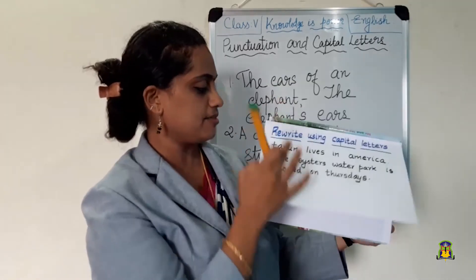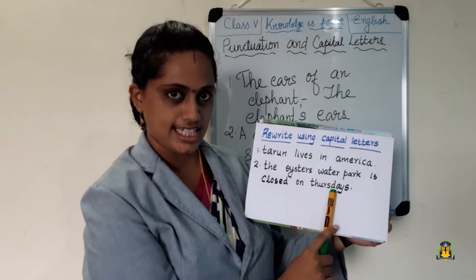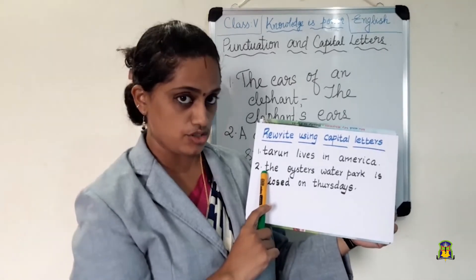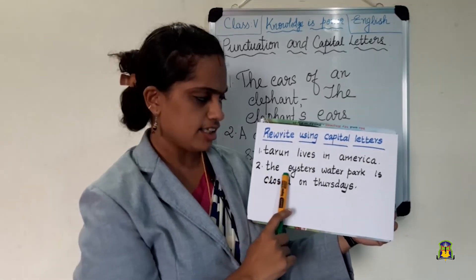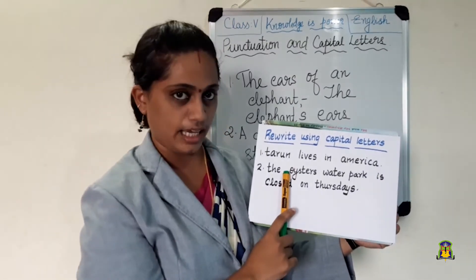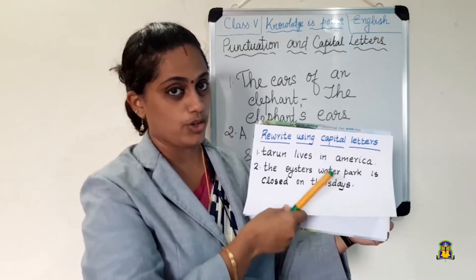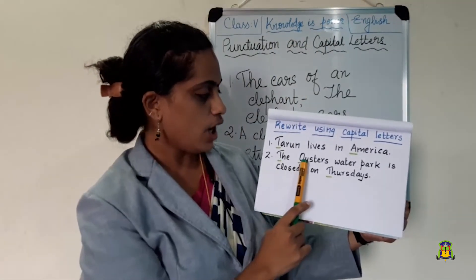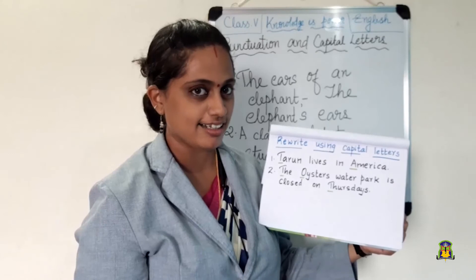Second question: 'The Oysters Water Park is closed on Thursdays.' A sentence should begin with a capital letter, so T is capital. Oysters Water Park is a proper noun — O should be in capital letters. Thursdays is also a proper noun, so T should be in capital letters. Answer: 'The Oysters Water Park is closed on Thursdays.' You have three more questions in that exercise — please complete those as homework.